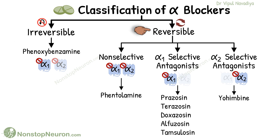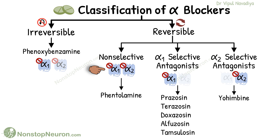Reversible agents can be further categorized based on receptor subtype selectivity. Here we have a non-selective agent, phentolamine, that acts on both subtypes of alpha receptor.